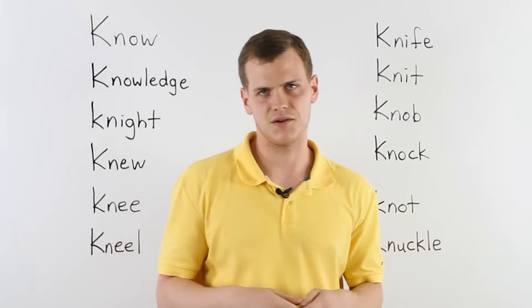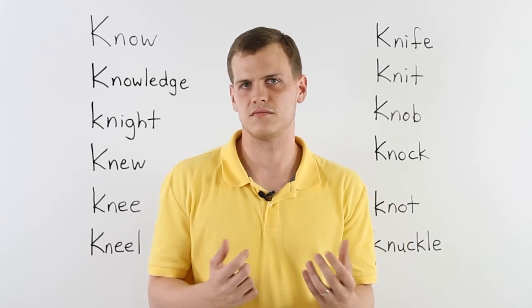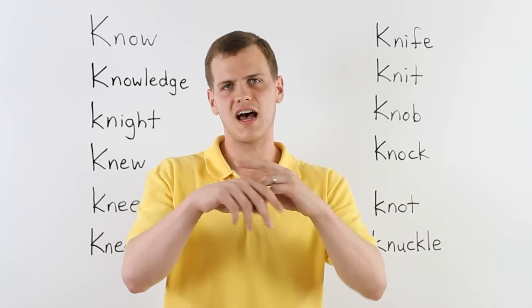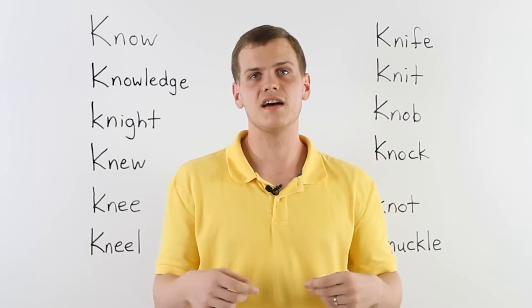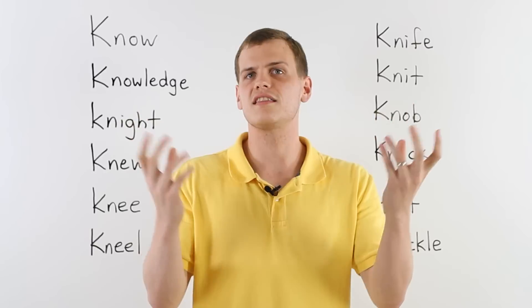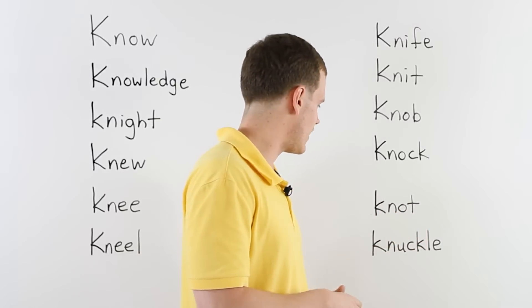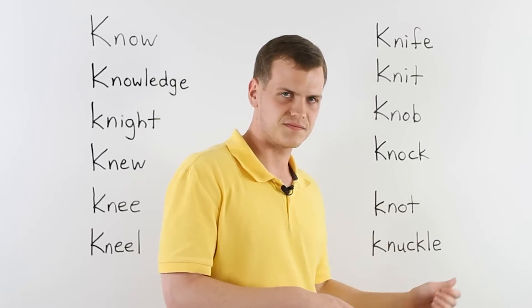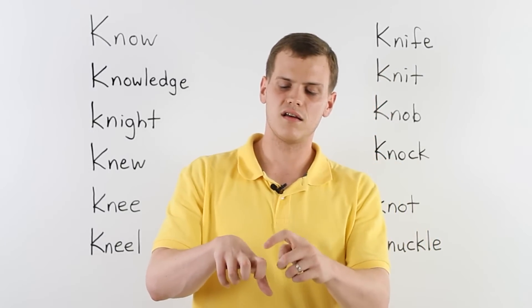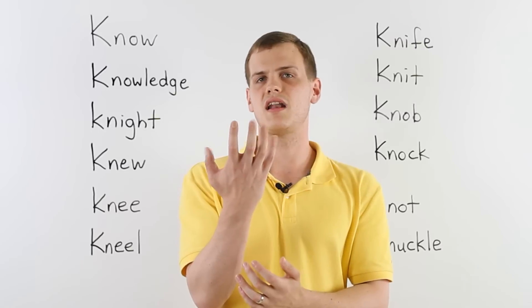Then we also have knot. Now, this isn't like I am not going home. No. With a K, knot is kind of like when you tie something like your shoes. You take your shoe strings and you tie them into a knot so that they don't fall down, fall apart. Tie your shoes in a knot. And then down here we have knuckle. Kind of like how knee is on your leg. A knuckle is on your finger. Right there. Where your fingers bend. Those are my knuckles.